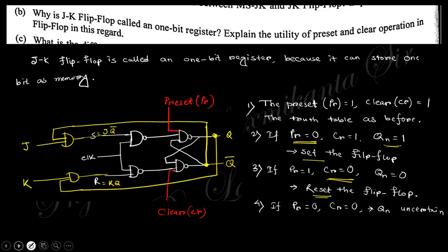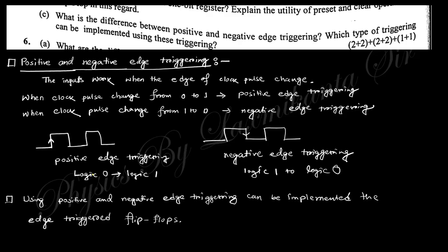The next question asks about the difference between positive and negative edge triggering, and which type can be implemented. Positive triggering means when the clock pulse changes from 0 to 1, the output changes. Negative triggering means when the clock pulse changes from 1 to 0, the output changes. Using positive and negative triggering, we can implement the SR flip-flop and JK flip-flop.